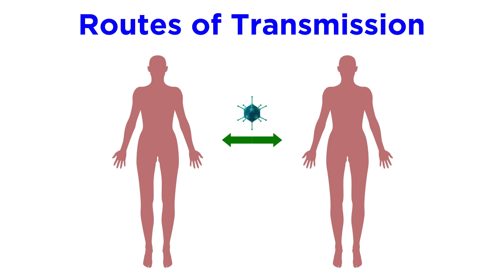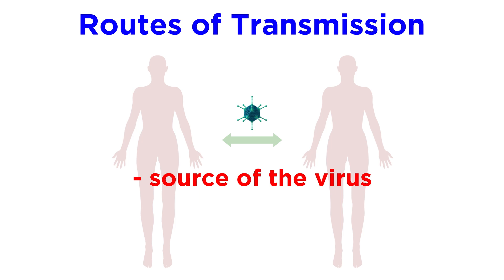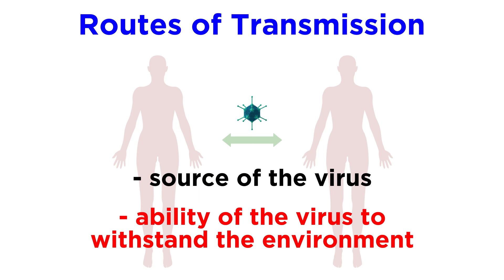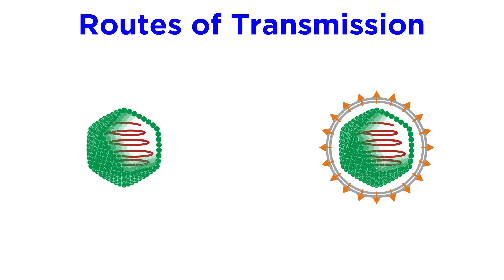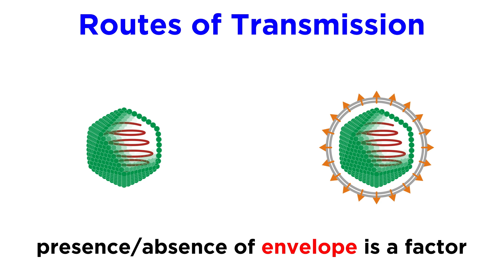When it comes to routes of transmission, it really depends on the source of the virus and the ability of that virus to withstand the environment it's up against. Zooming in on the molecular level, the presence or absence of a viral envelope is a primary determinant for mode of viral transmission.